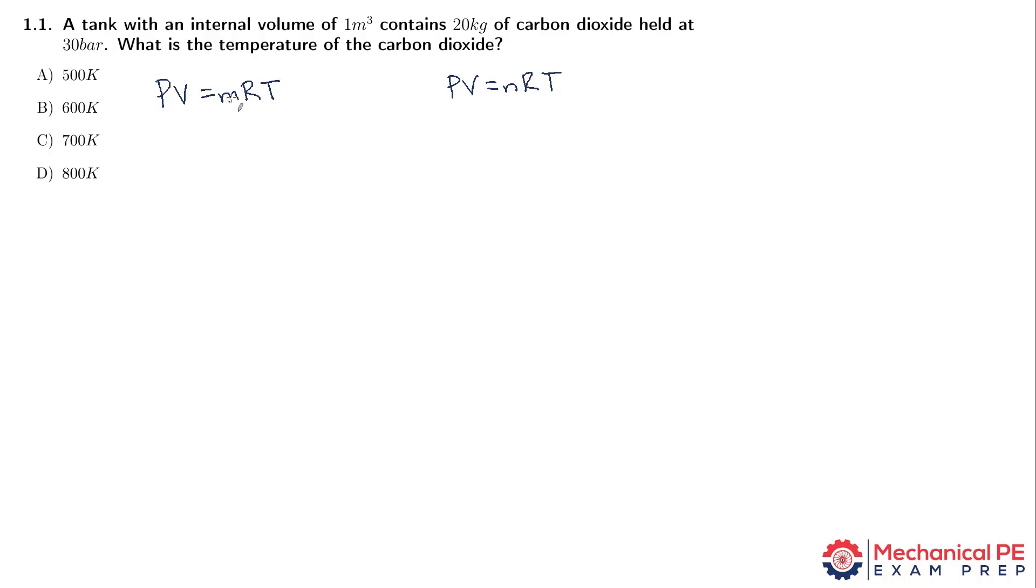Well the difference is that in the first one we're given M, which is mass in kilograms, and in the second one we're given N, which is the number of moles. And we have to use, instead of the specific gas constant, we have to use the universal gas constant, R bar, if we're given the number of moles.